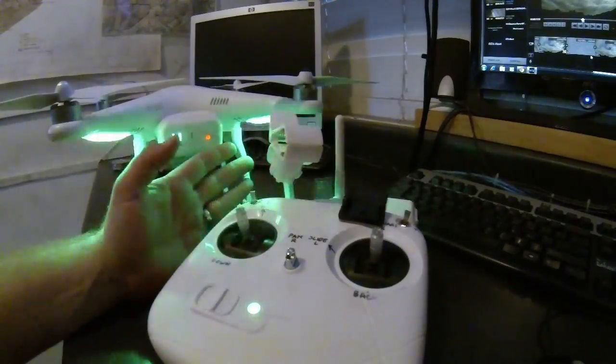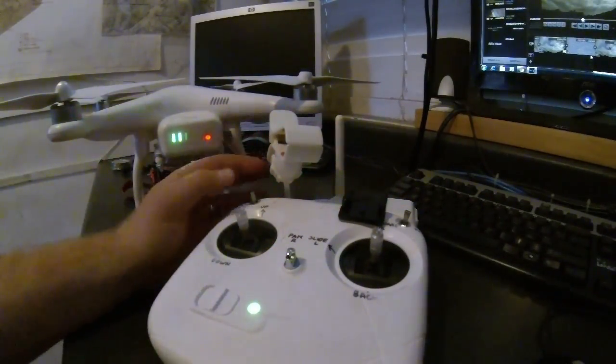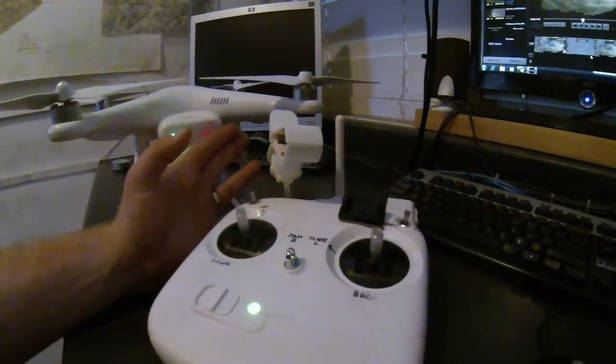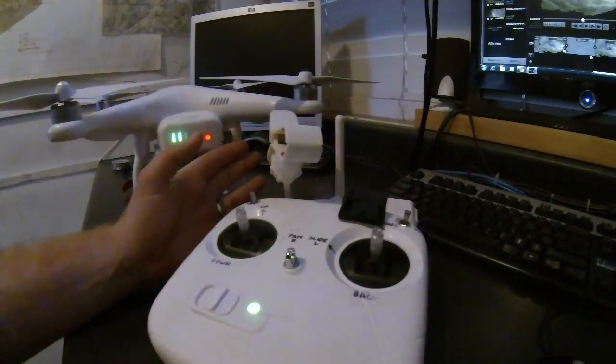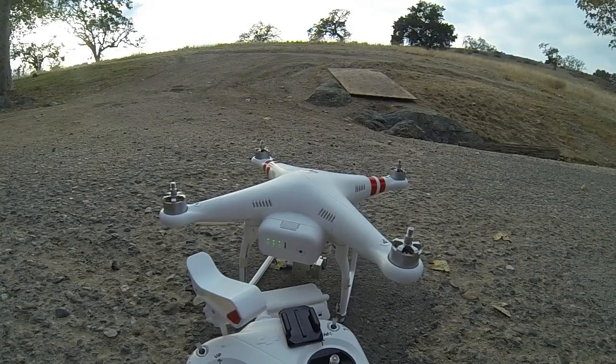Once you acquire your satellite lock, like it looks like it's doing right now, and you have all seven satellites, you'll get a steady green blinking light.